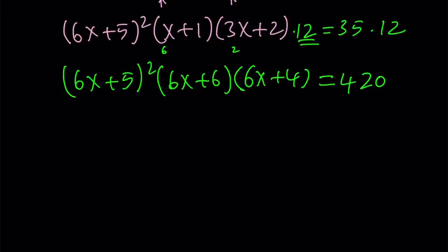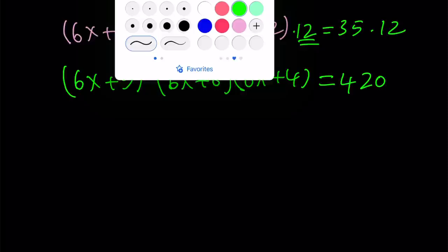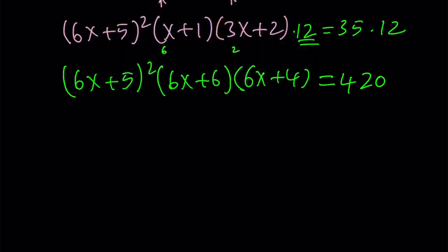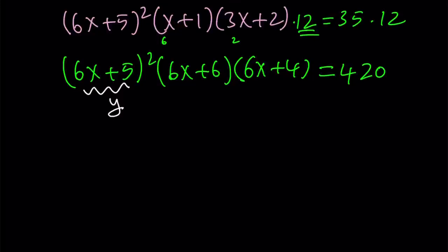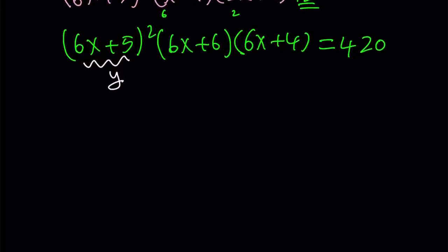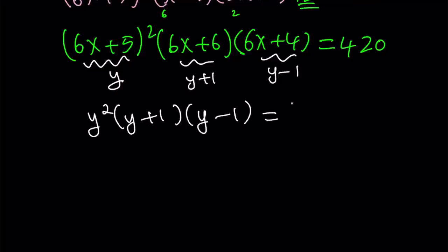Great. So I can use my favorite method, which is substitution. Yay. I'm going to call this, let's see, what should I call that? y. And you know why. If I call that y, this is going to be y plus 1. And this is going to be y minus 1. Awesome. This is going to give me y squared multiply by y plus 1, multiply by y minus 1 equals 420. But y plus 1 and y minus 1 are good friends. When you multiply them together, kind of like conjugates, you get difference of two squares, which is y squared minus 1.